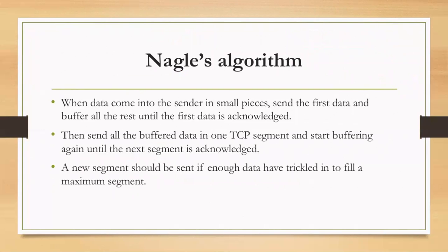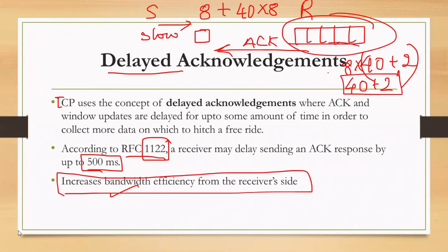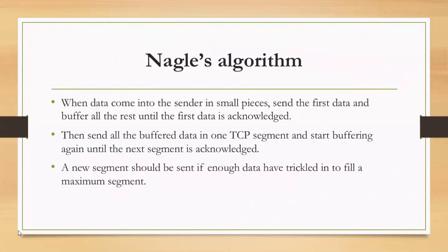The Nagle algorithm addresses bandwidth efficiency from the sender side. In the previous delayed acknowledgement discussion, we increased bandwidth efficiency at the receiver side. From the receiver side, unnecessary data being sent was reduced. But what about the sender side? The Nagle algorithm helps reduce bandwidth wastage from the sender side as well — there are ways to increase bandwidth utilization at the sender, and Nagle's algorithm helps you do this.